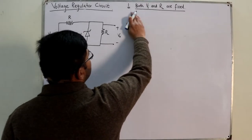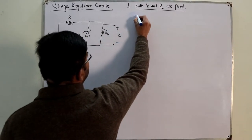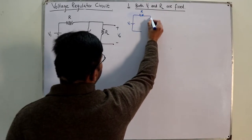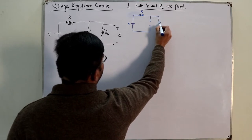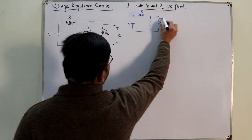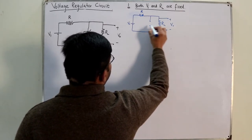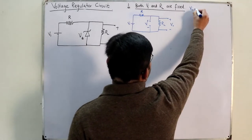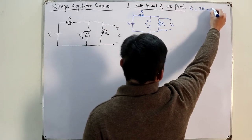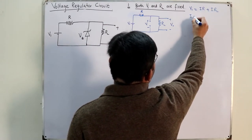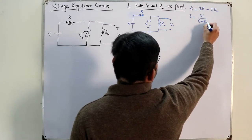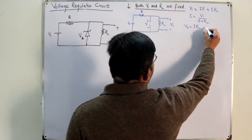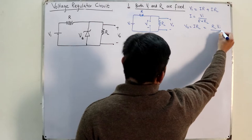Let us go through it step by step one more time. If I open circuit the Zener diode — this is my load RL, this is my resistance R, this is my input — the current will flow through R and RL. So VI equals I times R plus I times RL, which means I equals VI divided by R plus RL. The output is I times RL, which equals RL times VI divided by R plus RL.